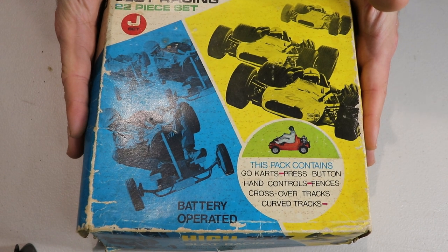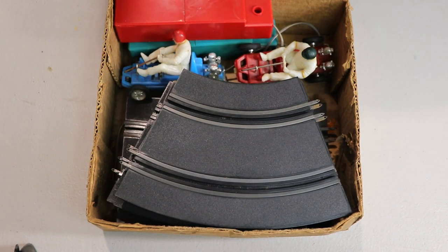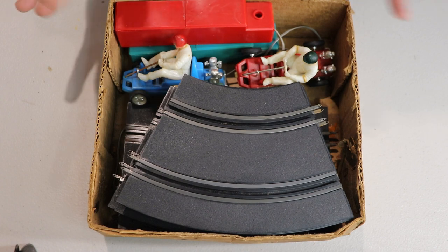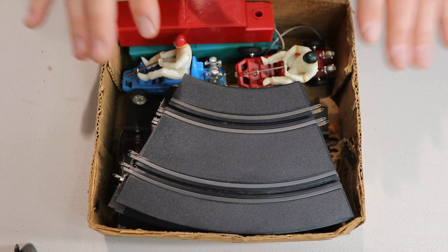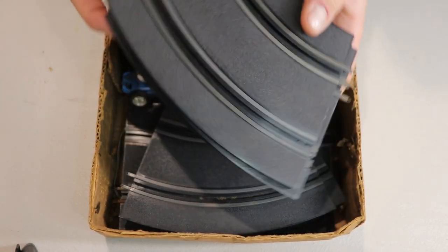Let's take off this goodness. Hopefully no butterflies or moths come flying out. There we go. We're probably missing the insert but that's okay. What you can see straight away, we've got two controllers, two go karts, and we've got ten pieces of track.